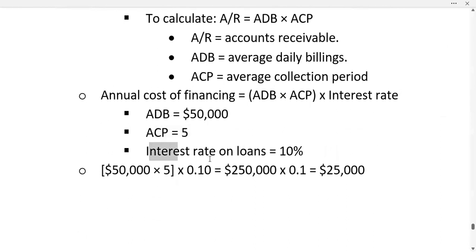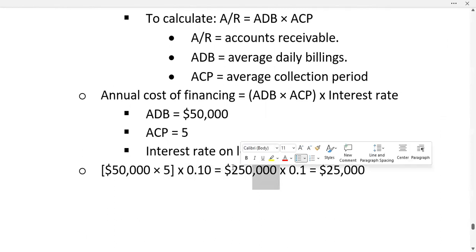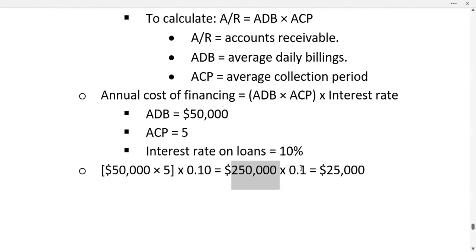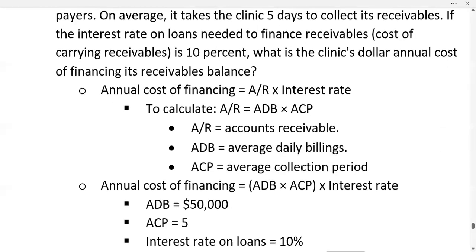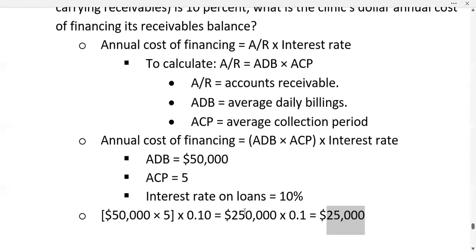The interest rate on loans is ten percent. So we multiply all three: fifty thousand dollars times five times zero point one, which gives us two hundred fifty thousand dollars times zero point one, equaling twenty-five thousand dollars. This amount represents the annual cost of financing. Thank you.